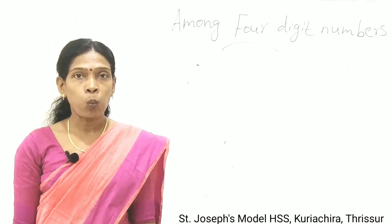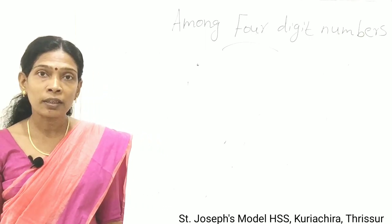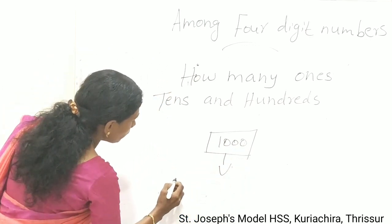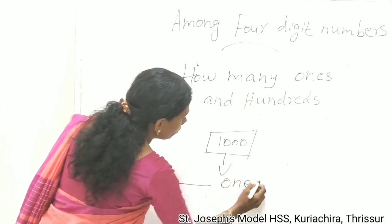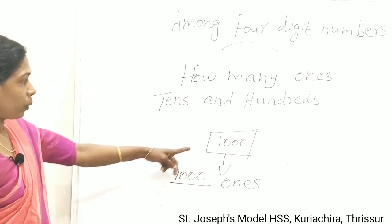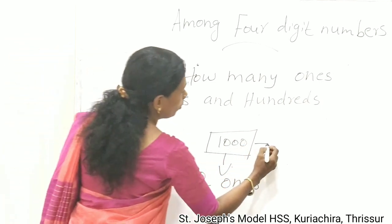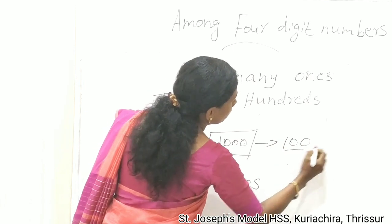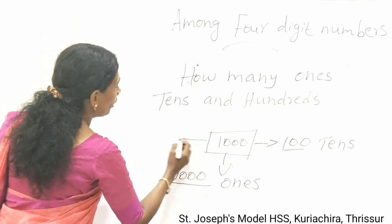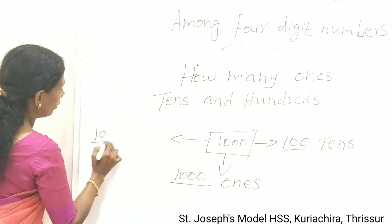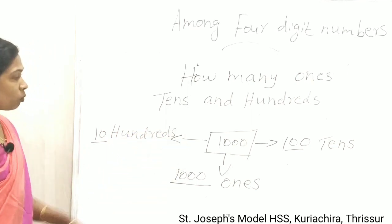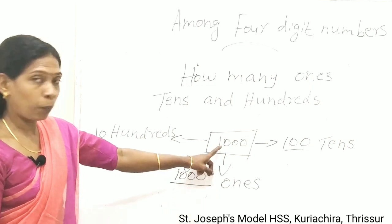Do you know how many 1s, 10s, and 100s are in 1000? 1000 ones make 1000. 100 tens make 1000. And 10 hundreds make 1000.